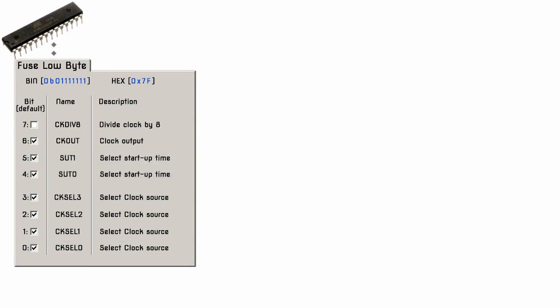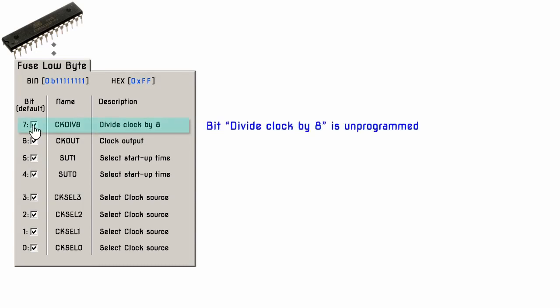Bit 6 controls the clock output to port B0, which we don't care about, so bit 6 can be left set to 1. Bit 7 controls the divide-by-8 operation, and the default setting of 0 has the feature enabled, which we don't want. So bit 7 needs to be changed from 0 to 1.